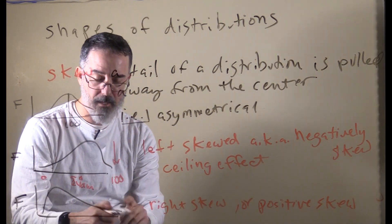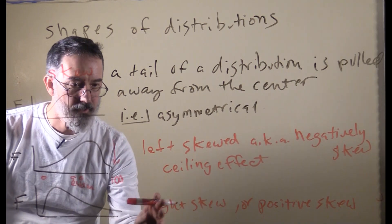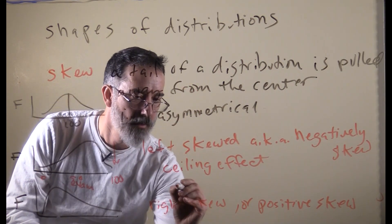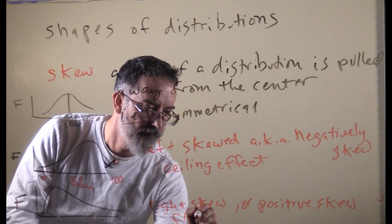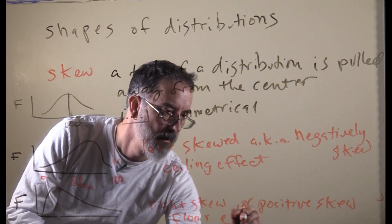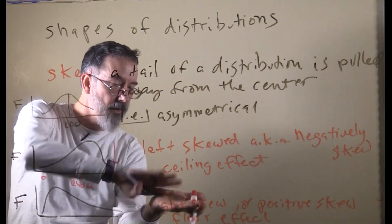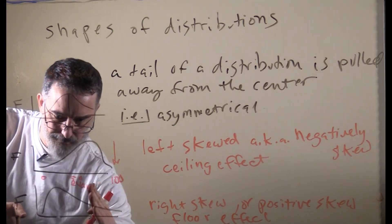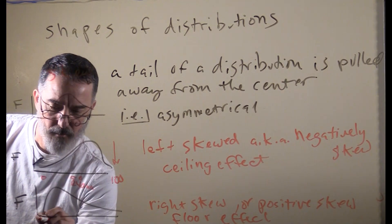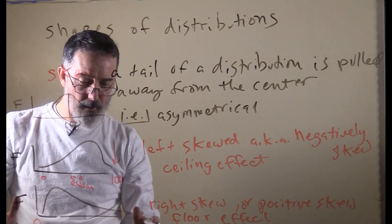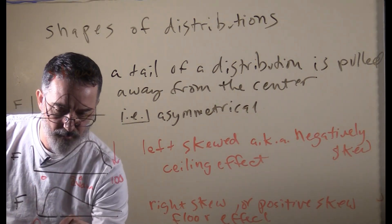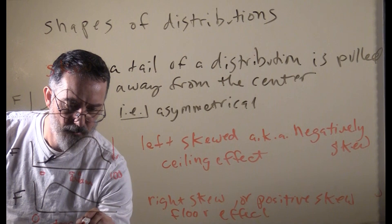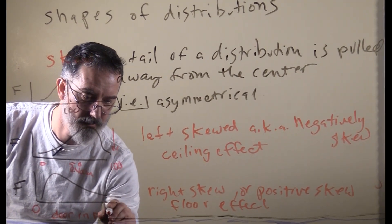On the other hand, and this is common in nature, you get right skewed distributions when there is something called a floor effect. Like a ceiling effect, a floor effect happens when there is a limit on the bottom. Let's say we are doing counts of the number of deer in national parks.